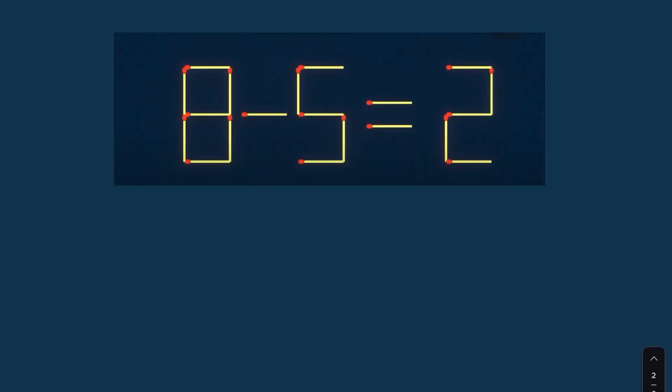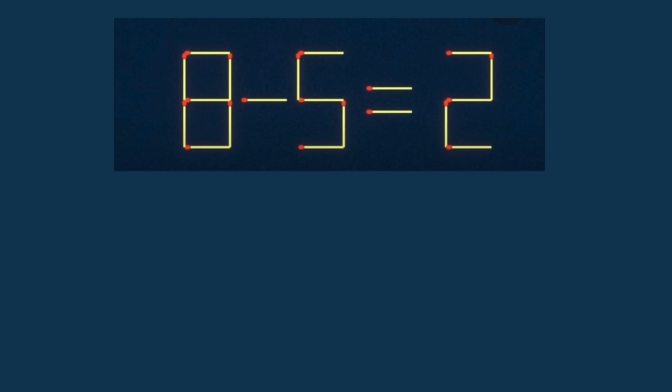8 minus 5 equals 2. So let's try this. If we move the stick from here to here, this 5 becomes 3. But 8 minus 3 does not equal 2. Or we can make this 9. Does 8 minus 9 equal 2? How? We can only move one stick. We can move this stick from here and put